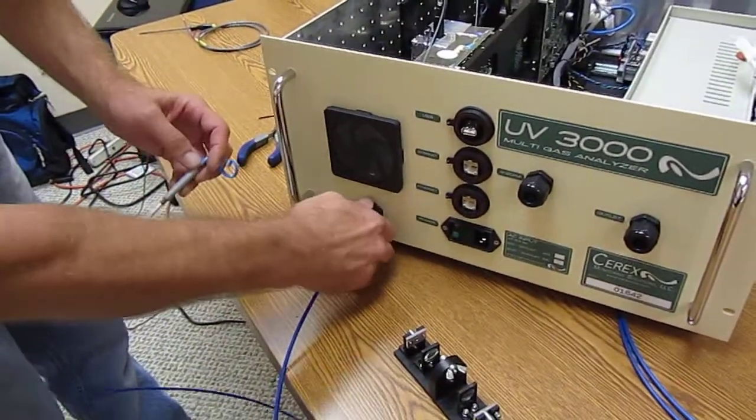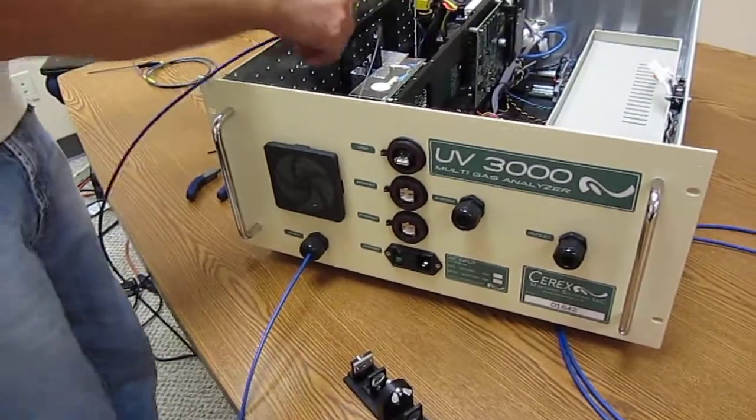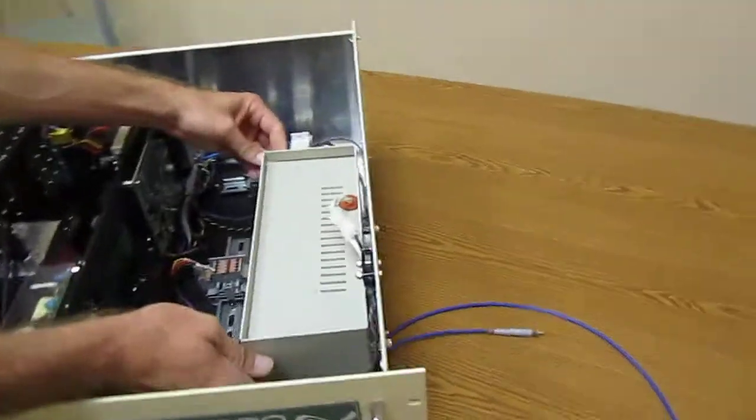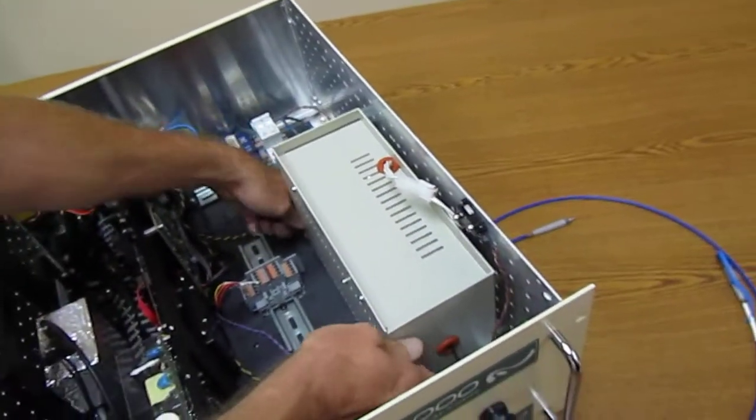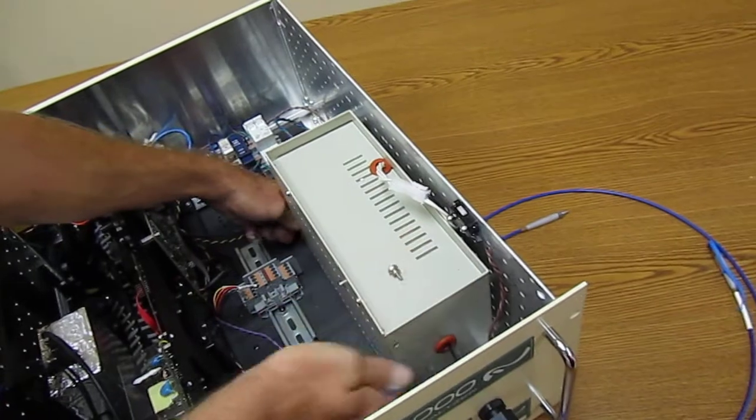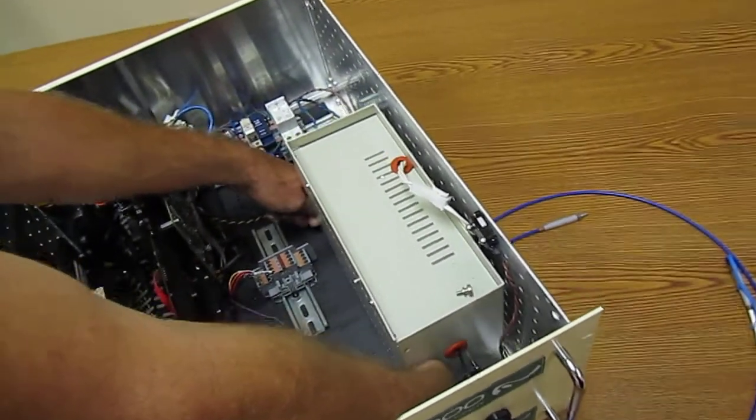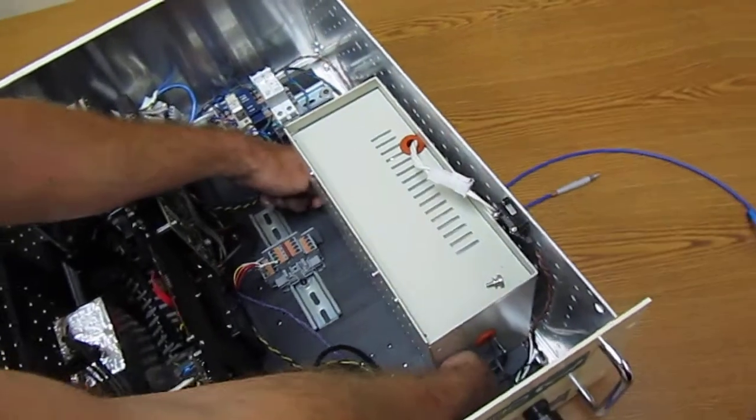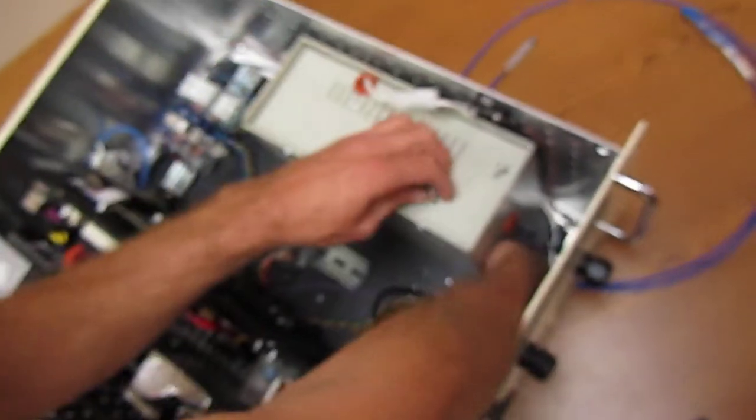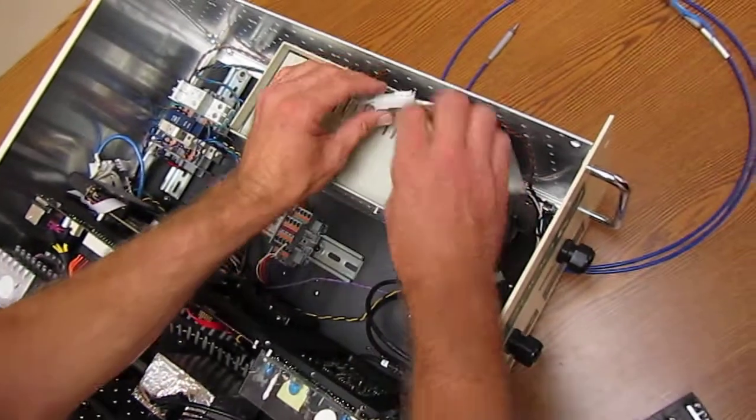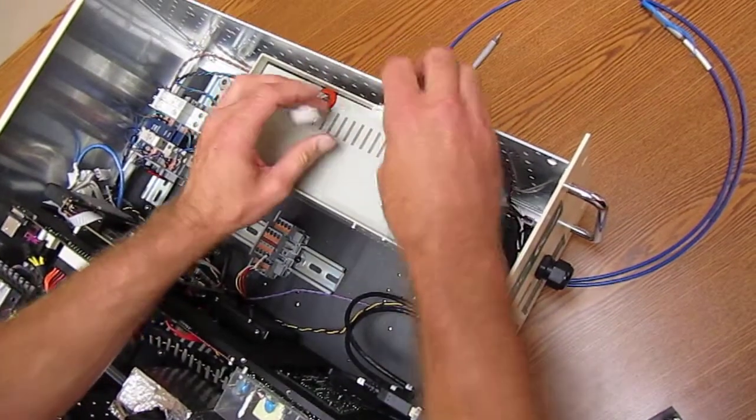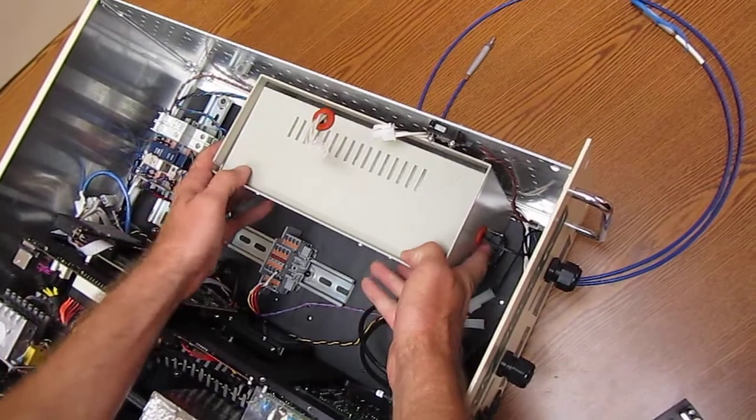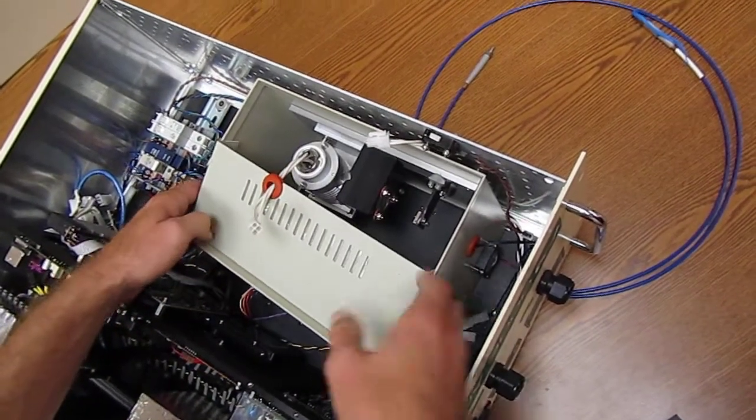To install the outlet cable, fiber optic cable, unscrew the thumb screws on the source lamp enclosure, disconnect the molex connector, and slide the housing away.